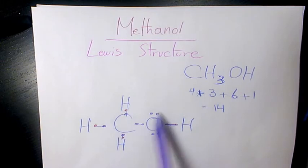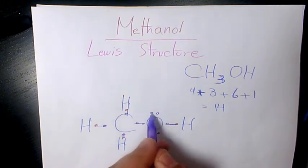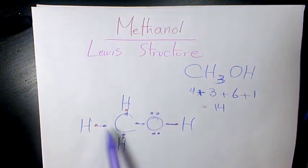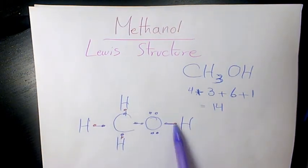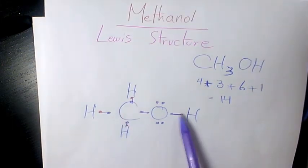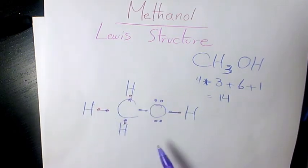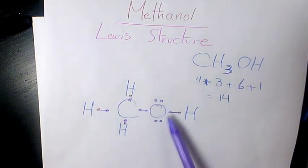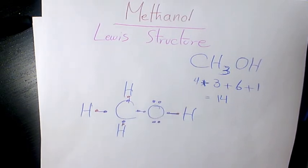And we have 2 lone pairs on oxygen, here and here. So as you see we have 2, 4, 6, 8, 10, 12, 14 in total. As you can see we have the duet rule satisfied for hydrogen, and we have the octet rule for carbon which has 8 electrons. And oxygen, same thing — 8: 2, 4, 6, 8. So that's the Lewis structure of methanol.